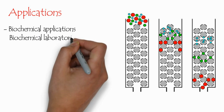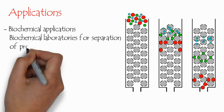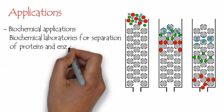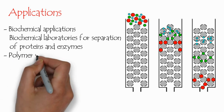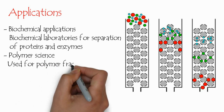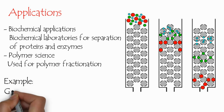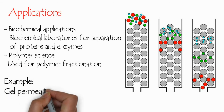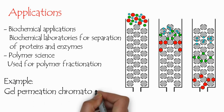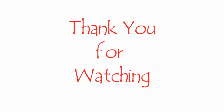Applications of size exclusion chromatography: In biochemical laboratories, it is used for the separation of proteins and enzymes. It is used in polymer science laboratories and industries to fractionate different types of polymers. The most important example of this kind of chromatography is gel permeation chromatography.